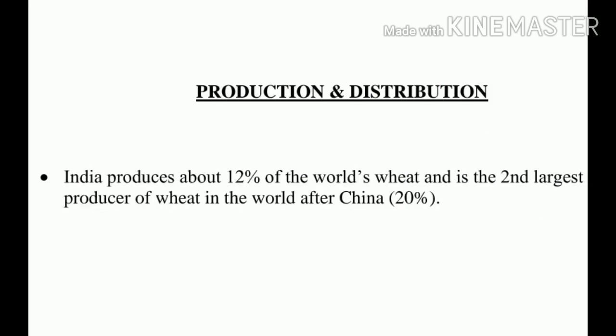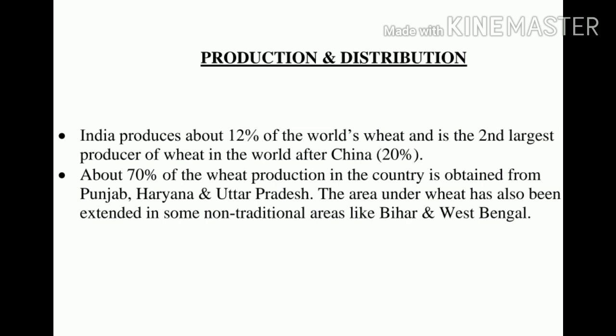Moving on to its production and distribution. India produces about 12% of the world's wheat and is the second largest producer of wheat in the world after China with 20%. A total of 95.91 million tons of wheat was produced from 31.19 million hectares of land in 2013-14, giving a yield of 3075 kg per hectare. This high yield has been possible due to the use of high-yielding varieties of seeds, intensive irrigation and fertilizers. About 70% of the wheat production in the country is obtained from Punjab, Haryana and Uttar Pradesh.